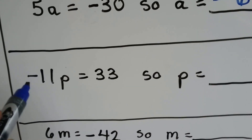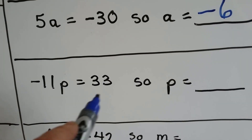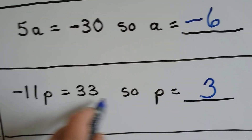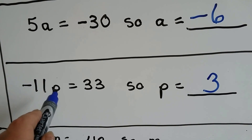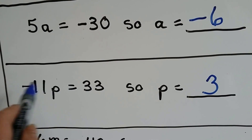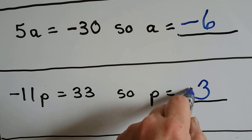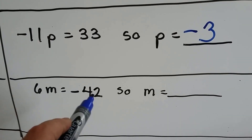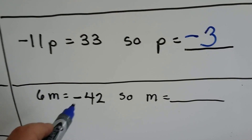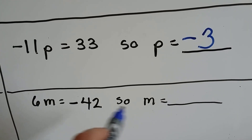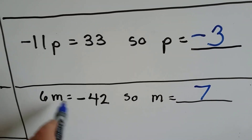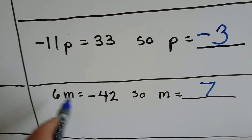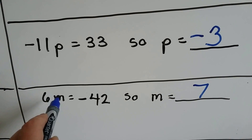Negative 11p equals 33. Eleven times what is 33? Eleven times three. We have a positive answer, so we need like signs with the negative 11. The 11 is negative, so p has to be negative three to get a positive answer. Next: 6m equals negative 42. Six times what is 42? Six times seven. We have a positive six but a negative answer, so we need unlike signs — m has to be negative seven.